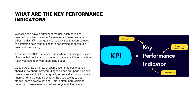These are the key KPIs that matter most when optimizing websites. How much it costs to acquire customers will determine how much you spend on your marketing budget. Google Ads has a variety of optimization methods that you should know about.